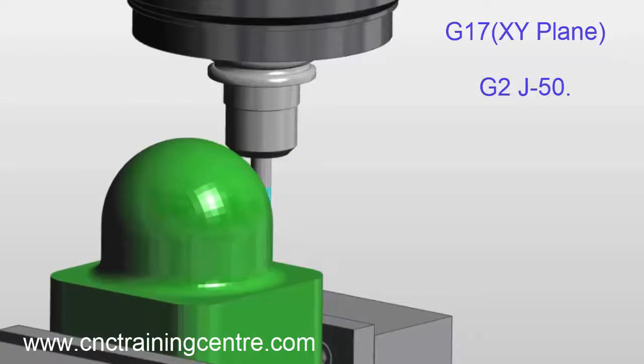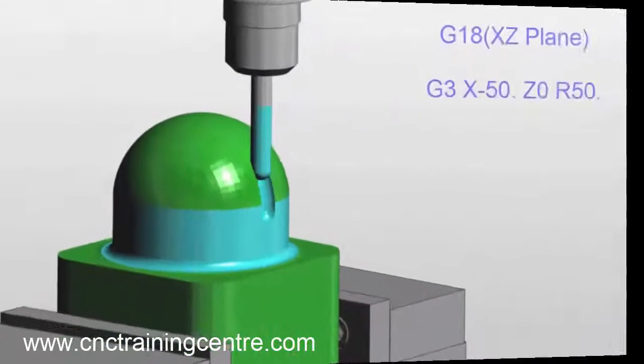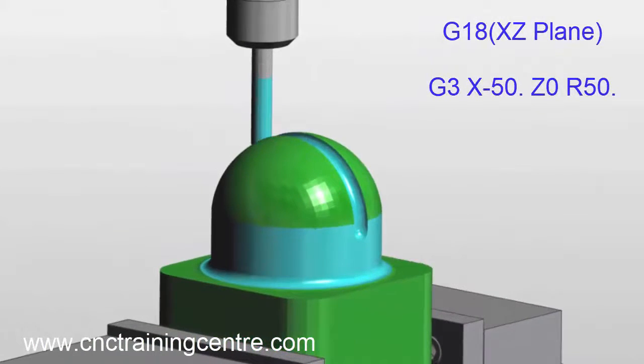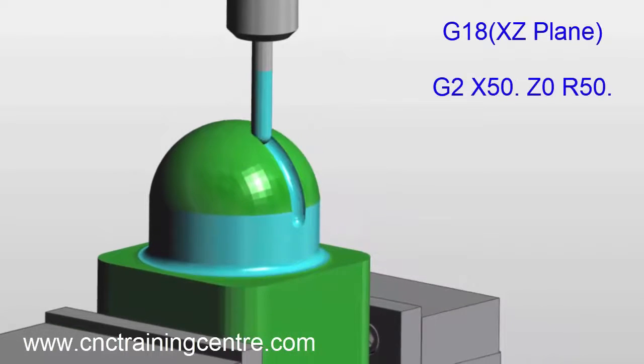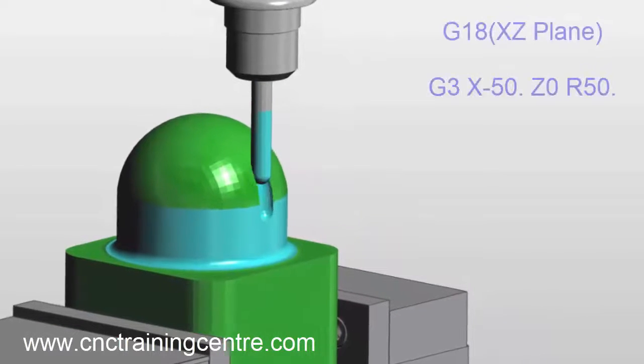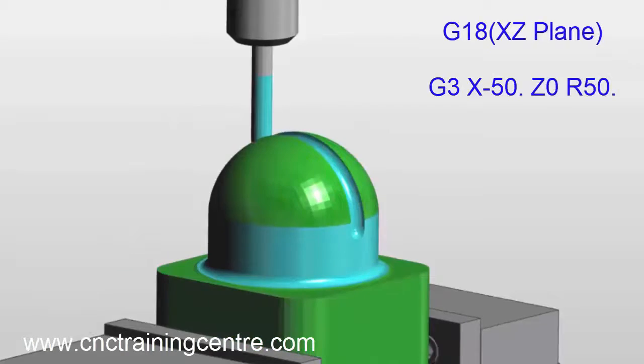The XZ plane is what you would see on a lathe. It doesn't look much like a lathe because this is on a machining center, but it will be doing this circular move in the X and Z axis.